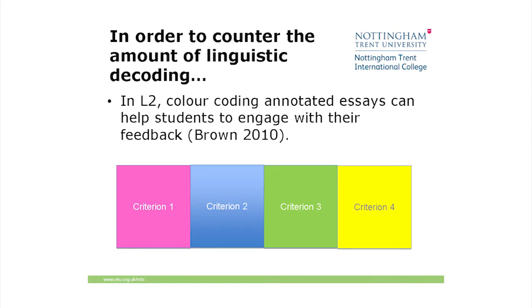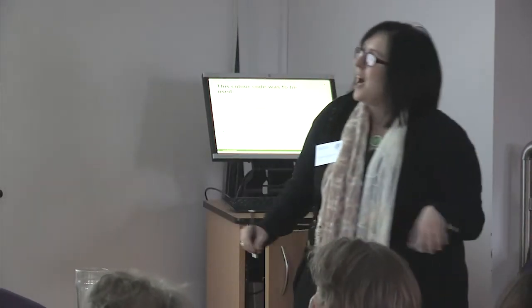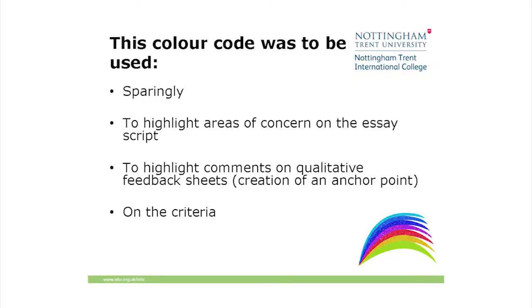There's some research suggesting that colour coding could help. So what I did was — these are just the colours of my highlighter pens in the office, nothing special about them — I had criteria one, two and three, highlighted them, and gave them to students with a colour code for them to clearly see. I'm going to use this colour code sparingly; I don't want a colour explosion on their pages. I'm going to highlight areas of concern on the essay script alongside the annotations, highlight my own comments on the qualitative feedback sheets, and give them the criteria.